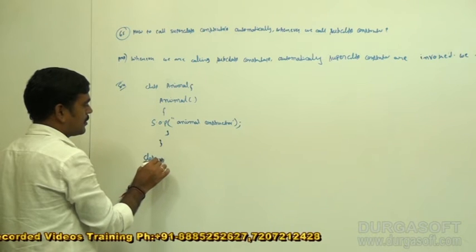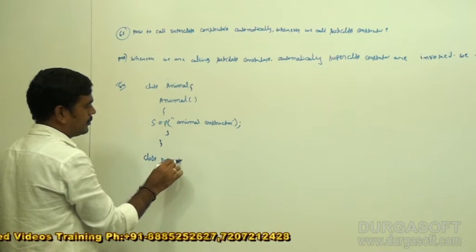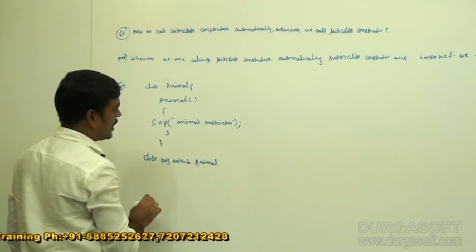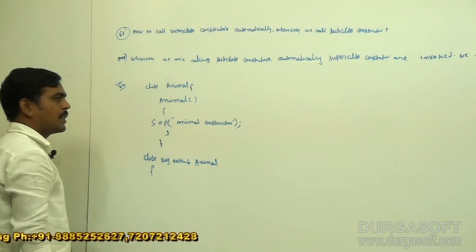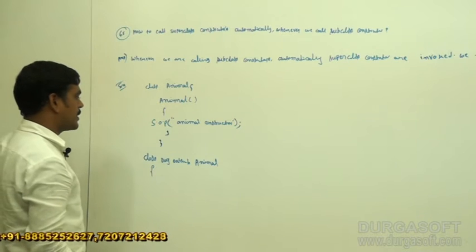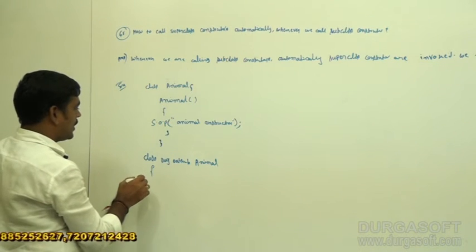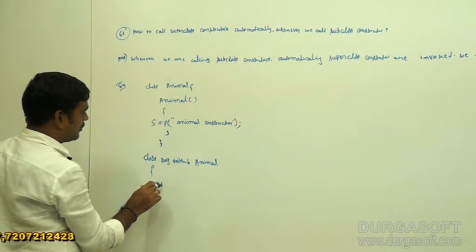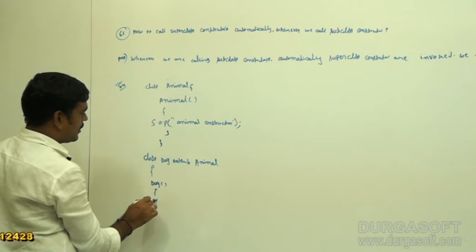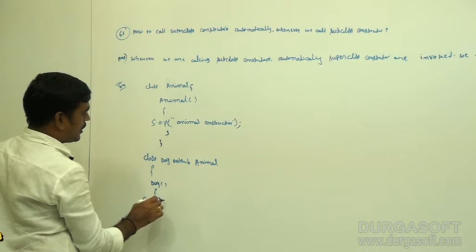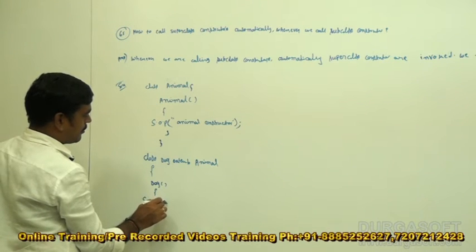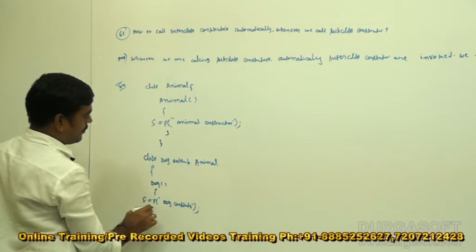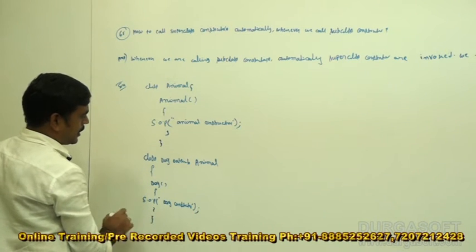Next class: Dog extends Animal. Here I am taking Dog constructor, system.out.println, dog constructor. Close the method, close the class.